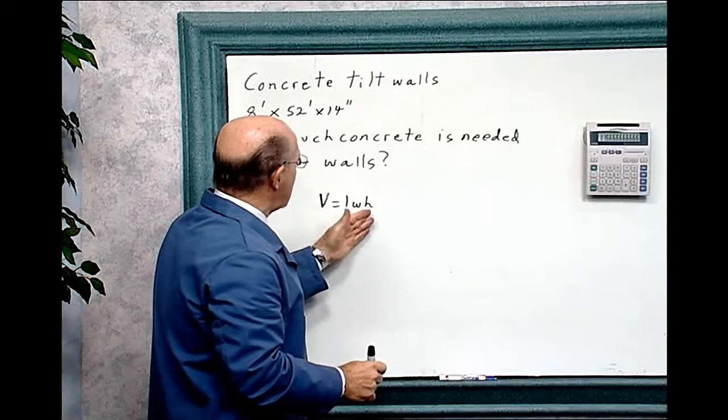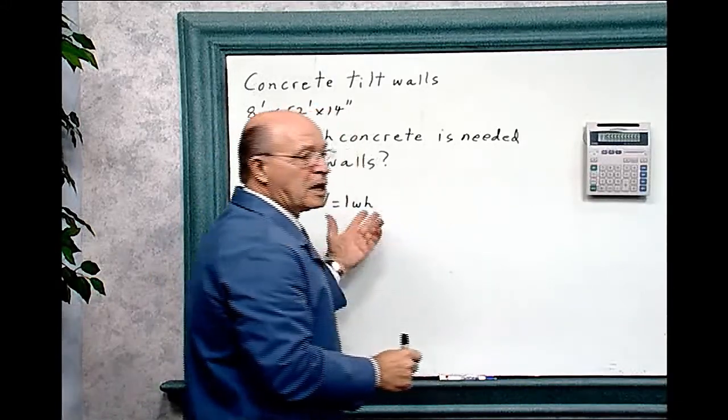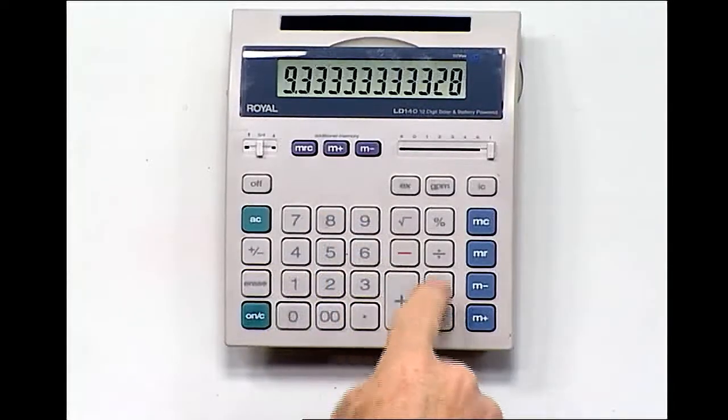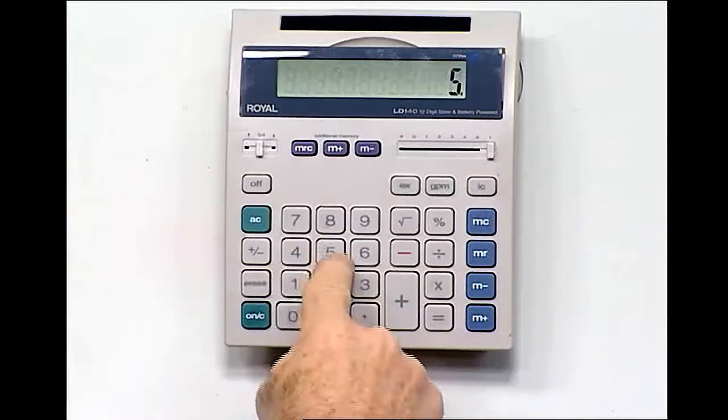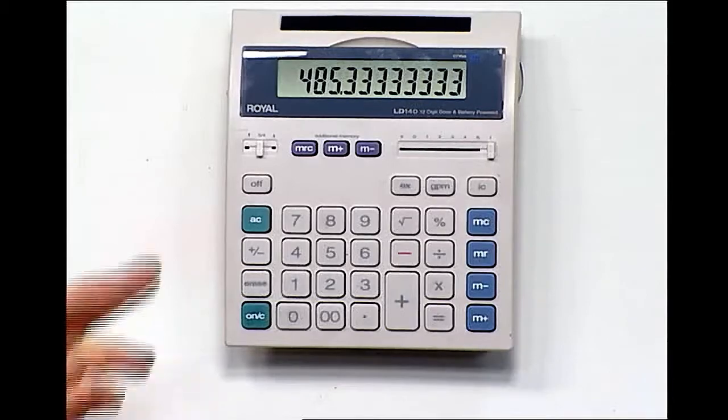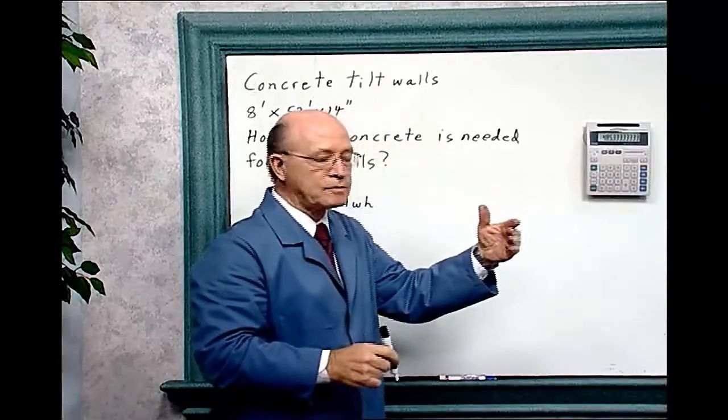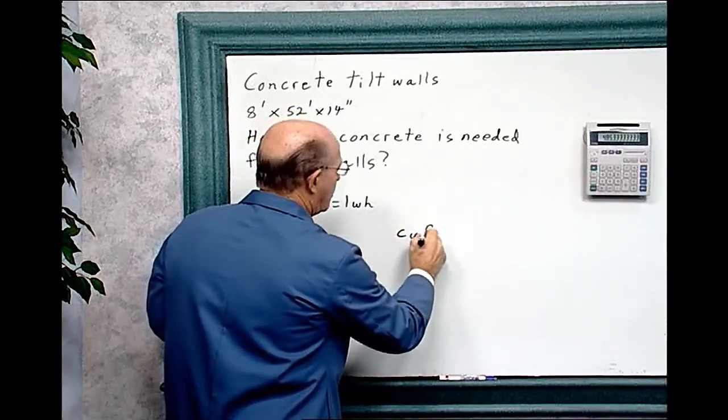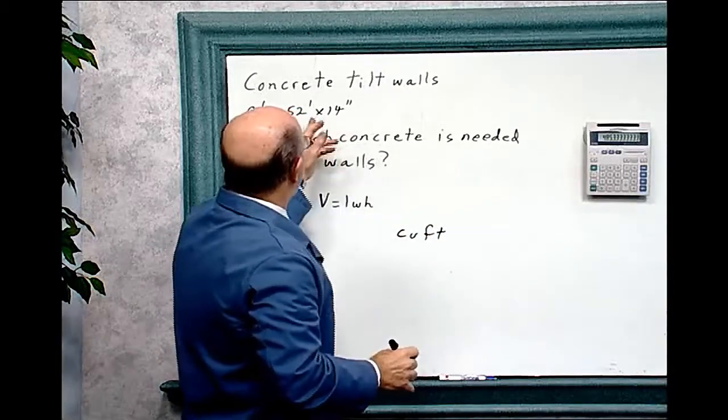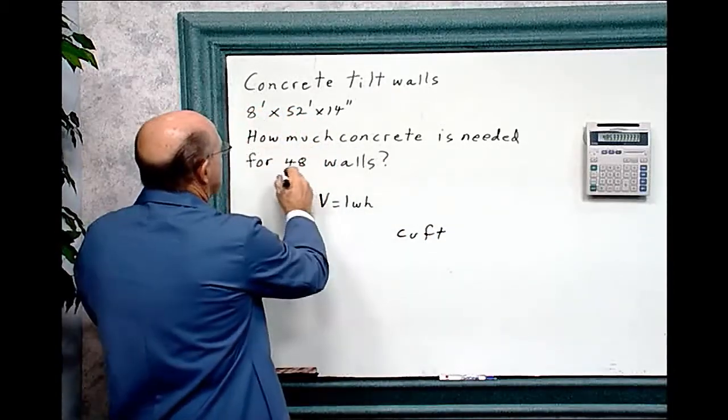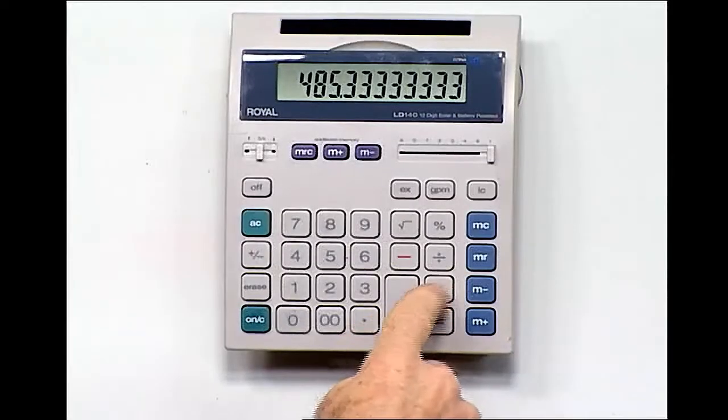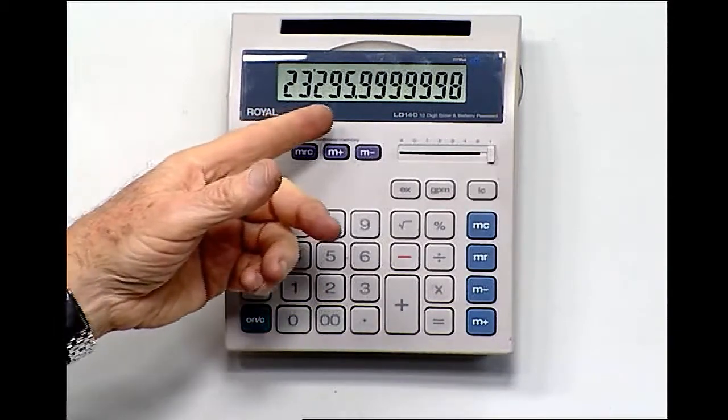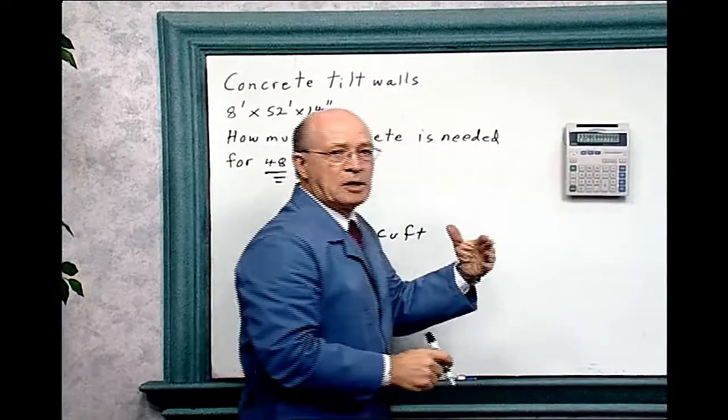Length times width times height. We're going to leave the height in there, so it doesn't make any difference in multiplication which one you do first. Times that by 8, then times that by 52 equals 485.333 cubic feet. Now, we know there's 48 walls. We have to multiply that by 48. 48 times 48 equals 23,296 cubic feet.